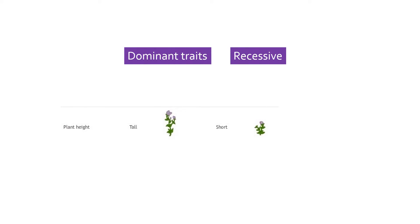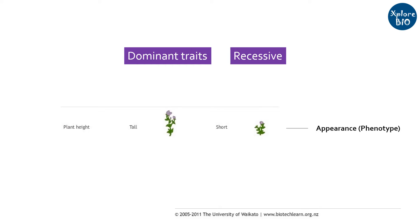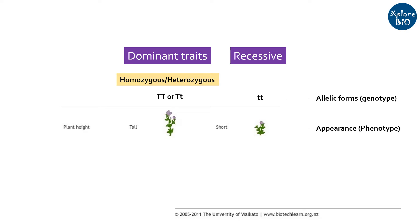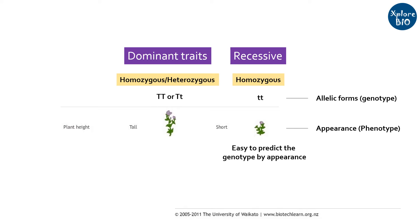Some traits or characters are dominant in nature. For example, tallness and green pod color in a pea plant. A dominant character is expressed in both homozygous and heterozygous state and it masks the recessive character. Therefore, it is clear that if a recessive character is being exhibited, it is surely in homozygous form. But to identify a dominant trait, which is expressed in both homozygous as well as heterozygous condition, it is not that easy.